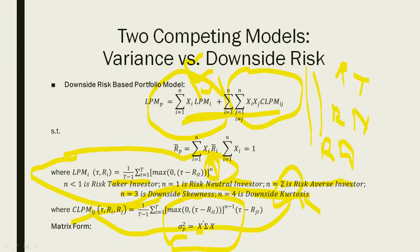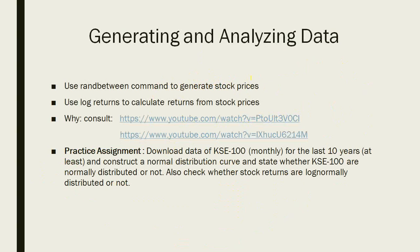In the matrix version — which we will be using in our Excel exercise — x represents the weights and the matrix represents your covariance, or it can be co-lower partial moments.